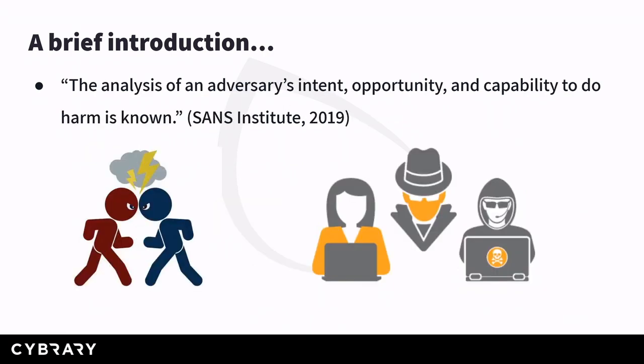More specifically, SANS Institute calls cyberthreat intelligence the analysis of an adversary's intent, opportunity, and capability to do harm. If you notice, the contrast between both definitions is that one refers more to general information about threats — it gives more of a passive definition of cyberthreat intelligence. And this second one talks about an active adversary with the specific resources and capabilities that might be targeting our organization. These two concepts contain the most important capabilities of cyberthreat intelligence and the usual perspectives for which this unit is used.